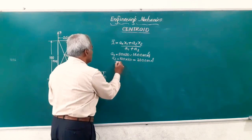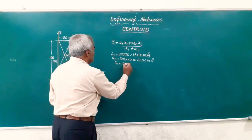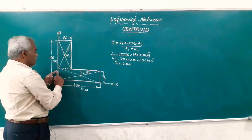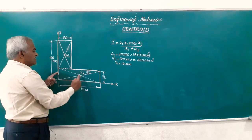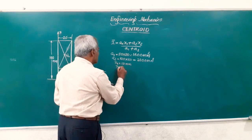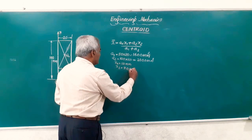I can say x1 is equal to 10 millimeter and x2 is the distance of g2 from this same y-axis. This is this gap that is nothing but 50, 100 by 2. So, x2 is equal to 50 millimeter.